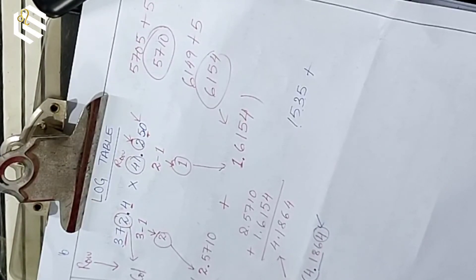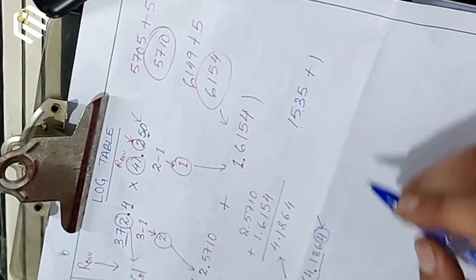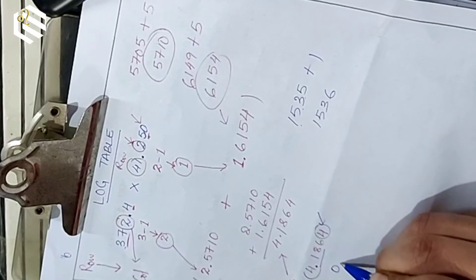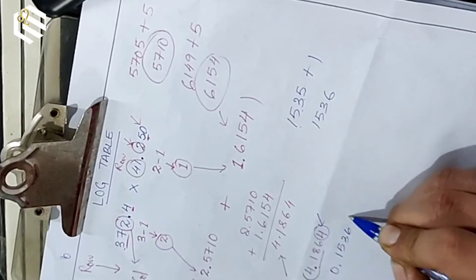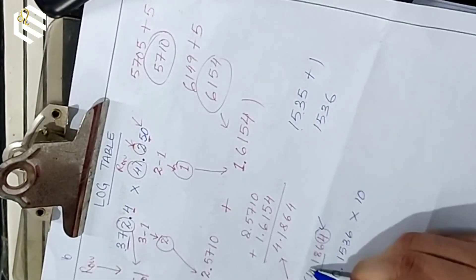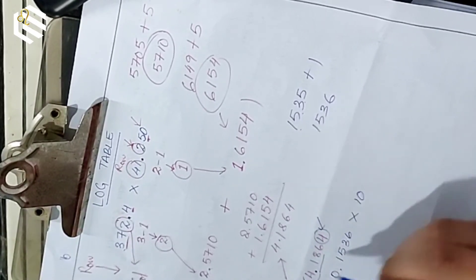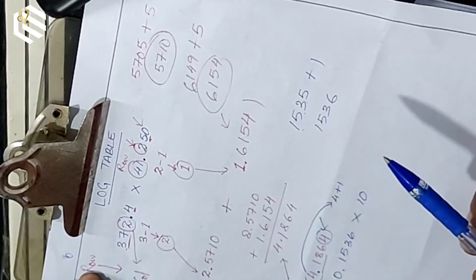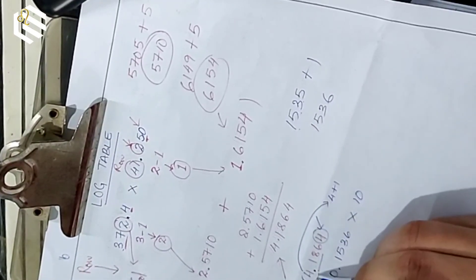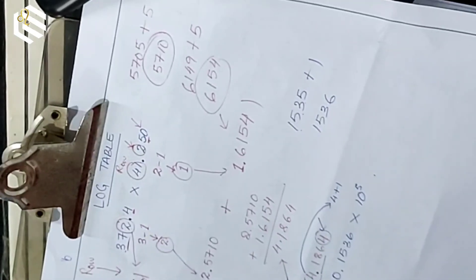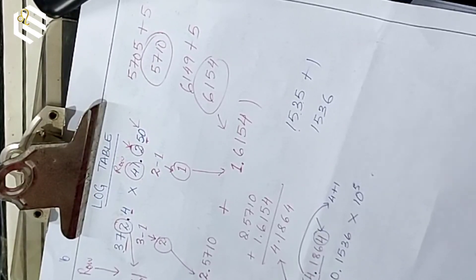Point 18 to one. One one five three six — one, one, five, three, six. Zero point one five three six into ten to the power. 4 plus 1 is 5. Answer: 0.1536 into 10 to the power 5.